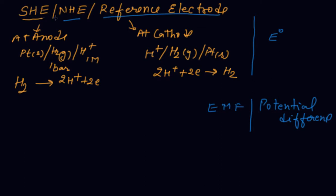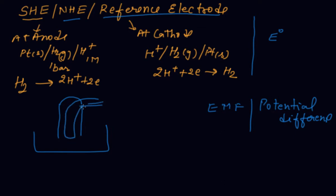What is SHE? SHE stands for Standard Hydrogen Electrode, also called Normal Hydrogen Electrode. We are taking hydrogen in a test tube with platinum black coating. Hydrogen gas is passed through the test tube with a platinum wire at one bar pressure and one molar HCl concentration.